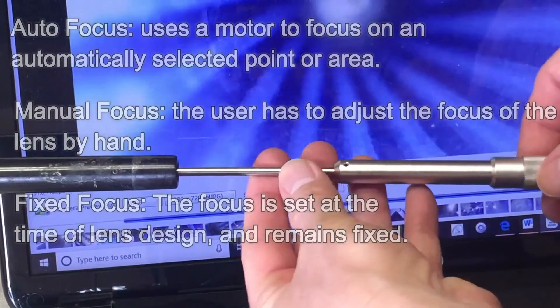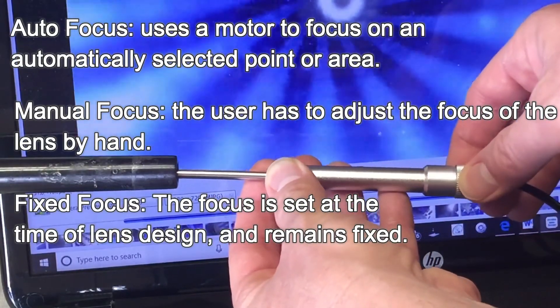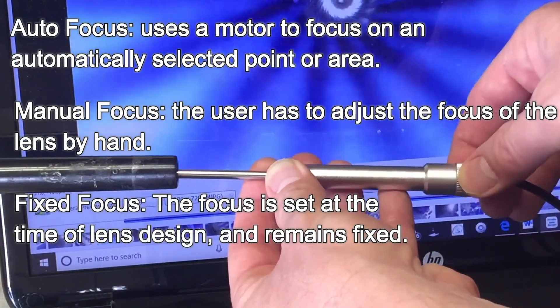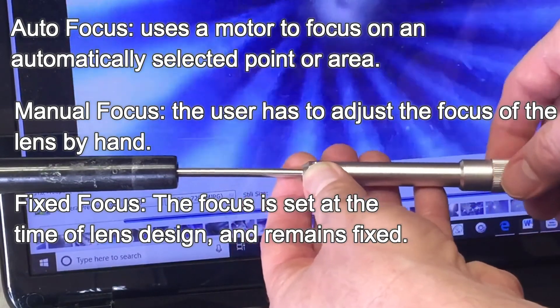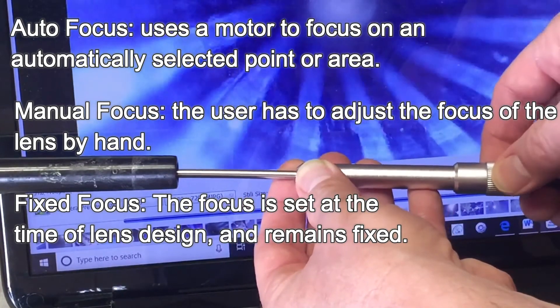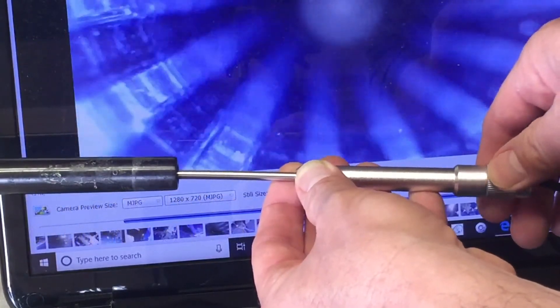Another factor to consider is whether you want your boroscope to be an autofocusing boroscope or fixed focus. You should also consider the boroscope's range and depth of field. Some cameras are calibrated to look at objects closer up, while others are designed to see farther away and with a greater depth of field to clearly view a larger area.